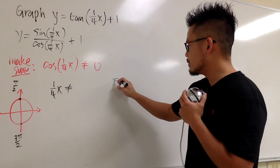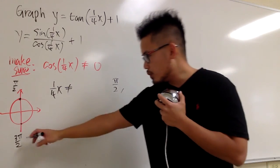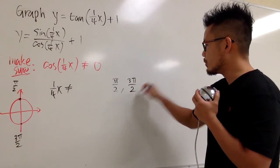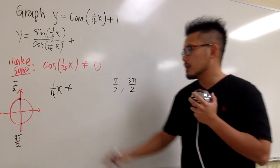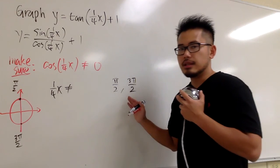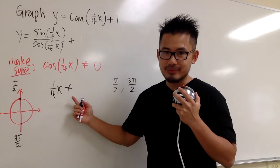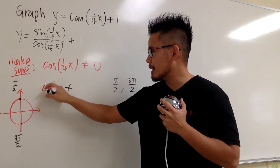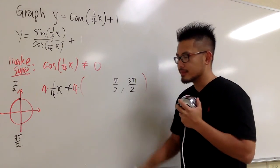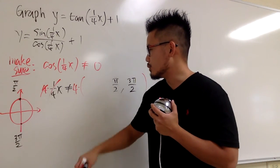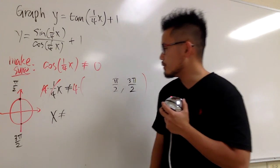We write 1/4 x ≠ π/2, then 3π/2, then 5π/2, and so on. To isolate x, we multiply both sides by 4, and the 4 in the denominator cancels out, giving us x ≠ 4 times those values.